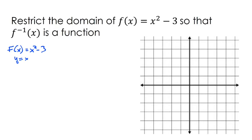So I'm going to write it in terms of x and y. I'm going to switch x and y. Then I'm going to solve for the new y. I'm going to add 3 to each side, and I'm going to take the square root of each side. So this right here should be my inverse.